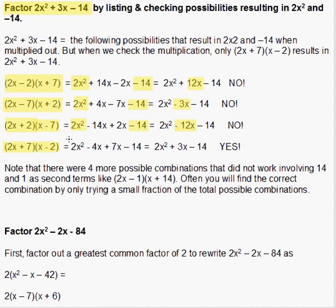Finally we try (2x + 7)(x - 2). This gives us 2x² and also gives us -14 when we multiply it out. The -4x and the +7x add up to 3x, which is what we want. So this last possibility of (2x + 7)(x - 2) is the one that works.